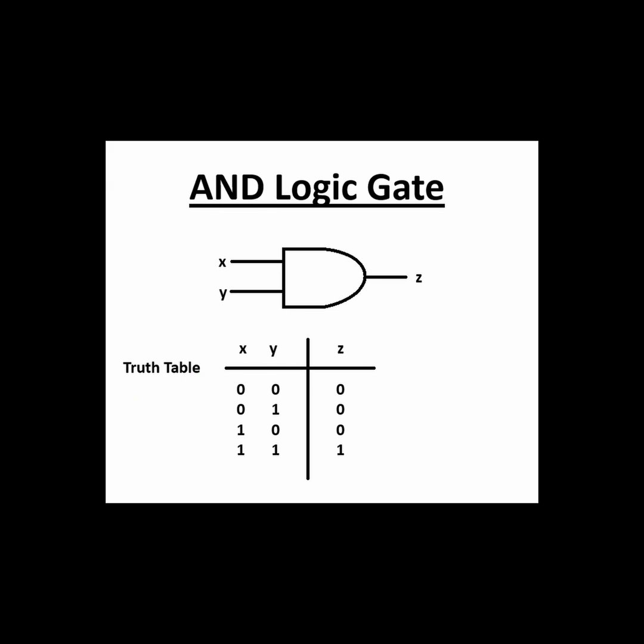We can map every possible set of inputs to its corresponding output. Since there are only two inputs, and each input can take two different values, that means there is a grand total of four possible input combinations to the gate.